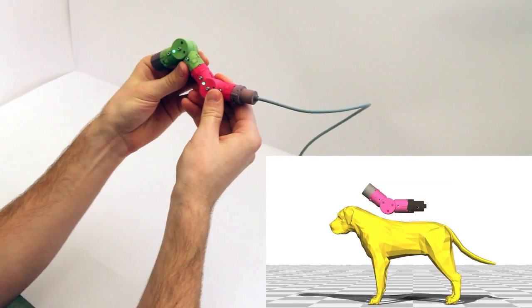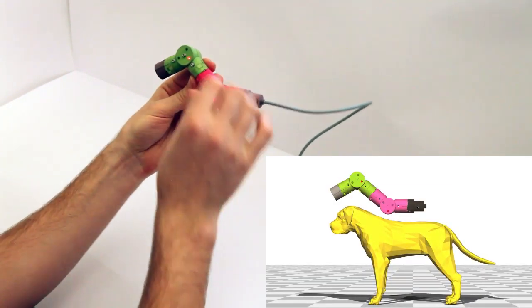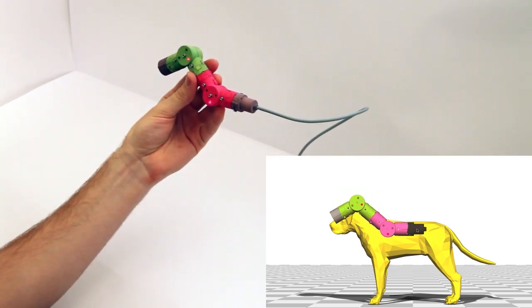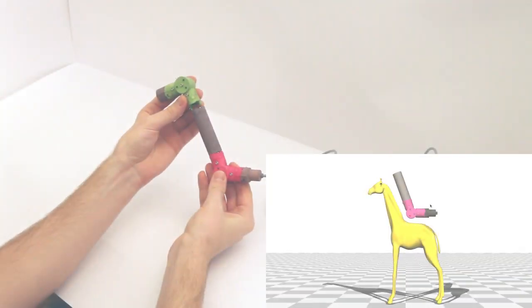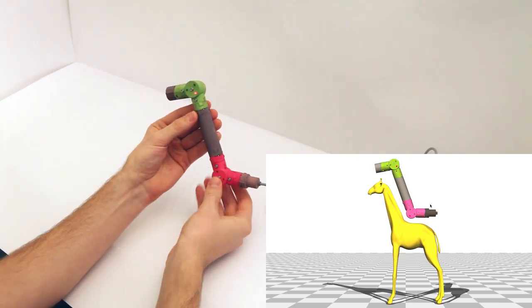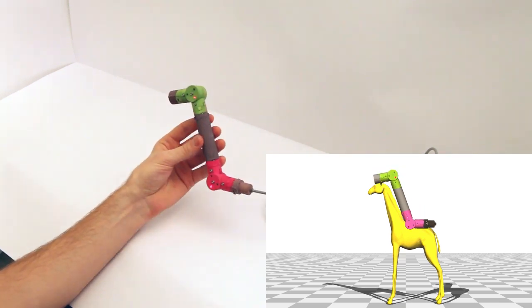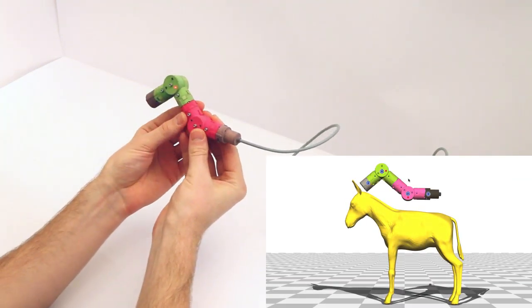Sometimes the proportions of the physical device will serendipitously match those of the virtual character, but in general the proportions will not match. We overcome this with extension pieces in extreme cases or by allowing the user to stretch bones virtually.